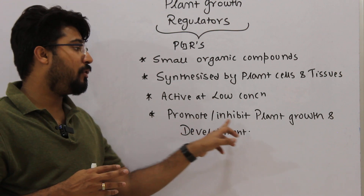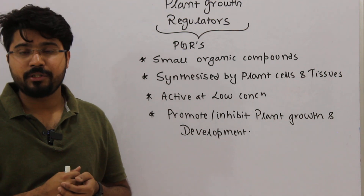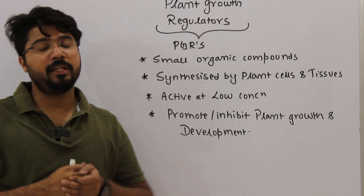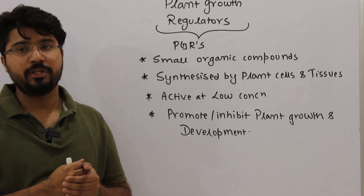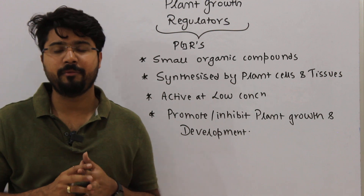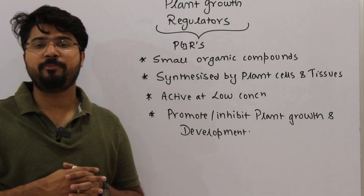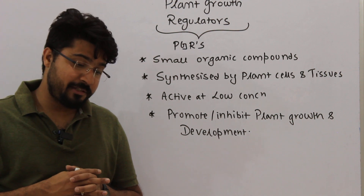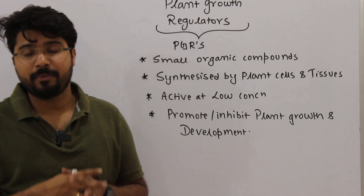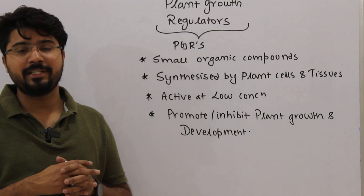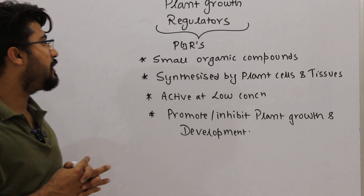PGRs can either promote or inhibit plant growth and development — they can have promotive roles as well as inhibitory roles. As far as stress hormones like ethylene and ABA are concerned, stress response hormones are actually synthesized during stress. They do not cause plant stress; they are synthesized during stress and help the plant to overcome such stress responses — we will understand that later on.